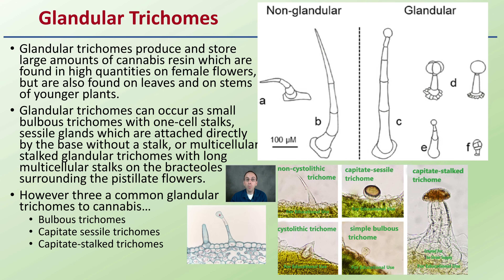Glandular trichomes can occur as small bulbless trichomes with one-cell stalks, sessile glands attached directly at the base without a stalk, or multicellular stalked glandular trichomes with long multicellular stalks into the bracts surrounding the pistil flowers. If you look with a strong magnifying loupe towards the area of the unfertilized flower or inflorescence, you might find these different structures. There are three common glandular trichomes, and we'll go through each with a picture so you can identify them.